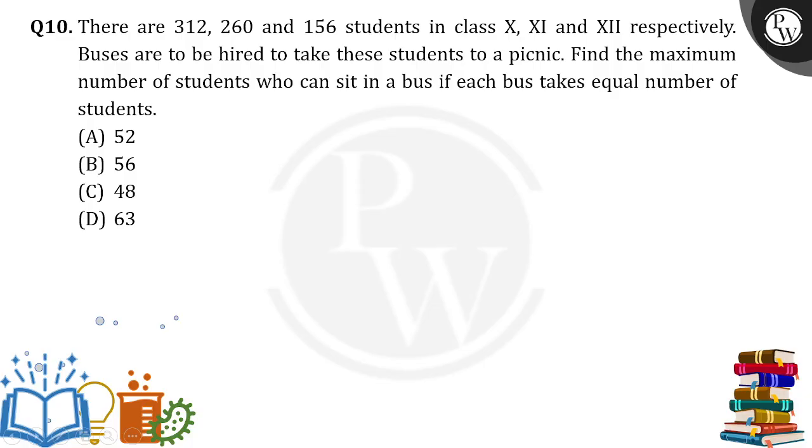This means that we need to find the highest common factor of these three numbers. So first we will do it for 312, the common factor. First we have to do prime factorization.